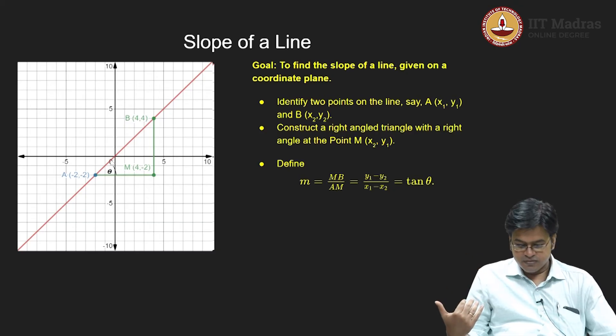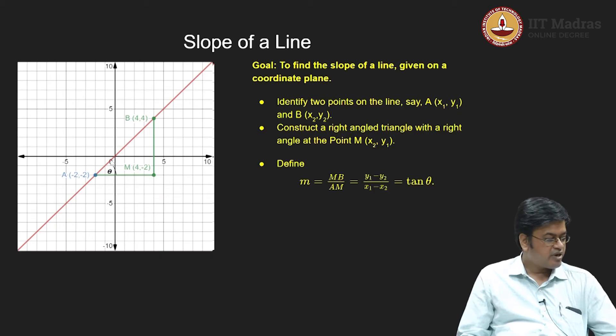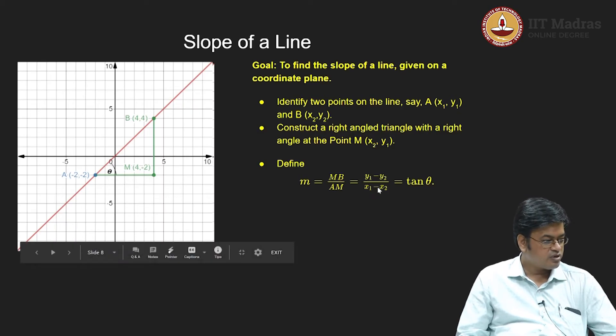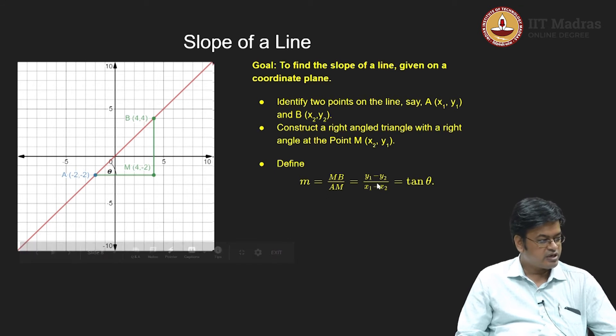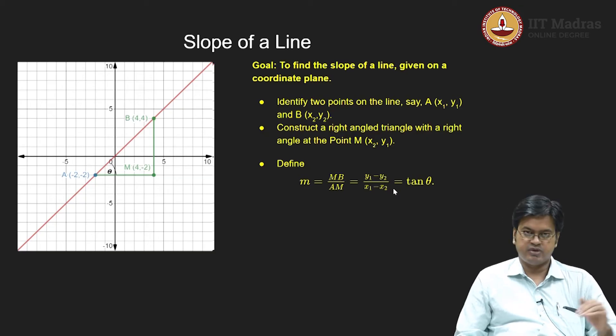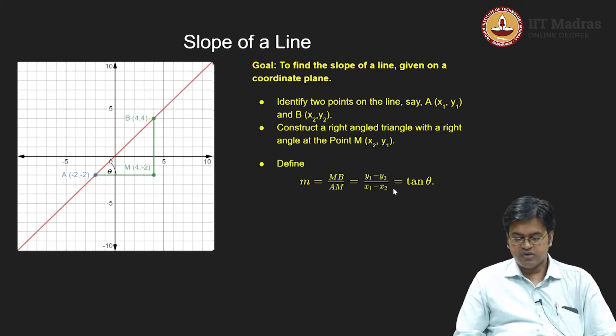So if it is tan theta, see here it does not matter whether I take y1 minus y2 or y2 minus y1, whatever I am doing I should do synonymously. For example, if I have taken y2 minus y1 then I should take x2 minus x1, or if I have taken y1 minus y2 then I should take x1 minus x2. So it does not matter which order you are swapping because finally you are taking the ratio. Whatever you are doing, you do it asynchronously, you do it in sync, so that there would not be any confusion.